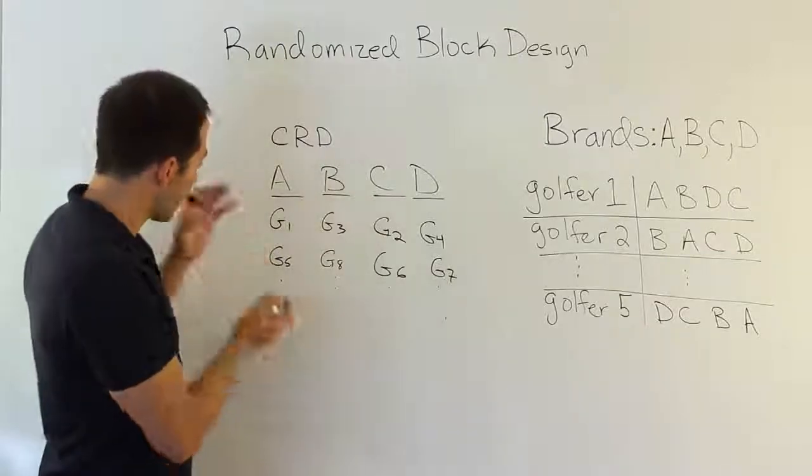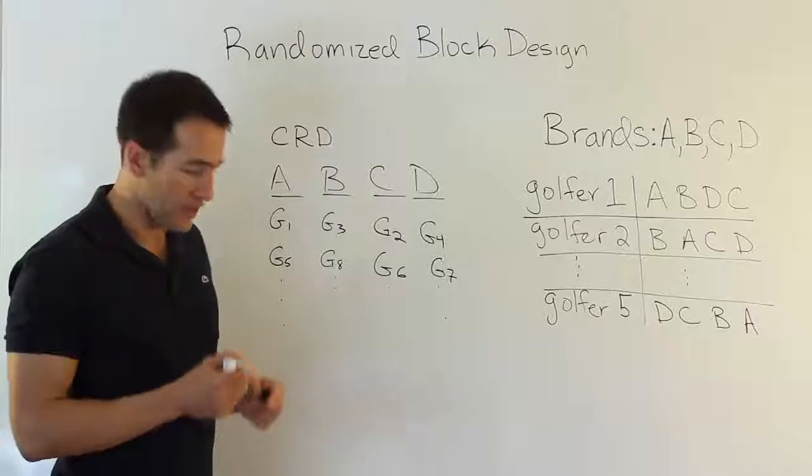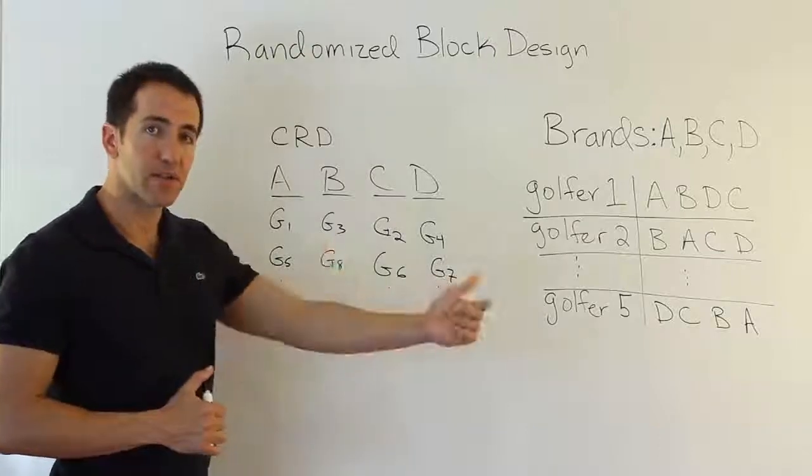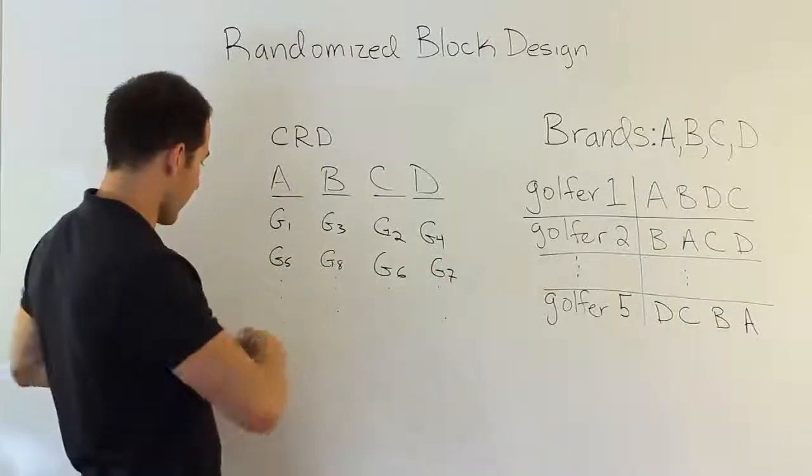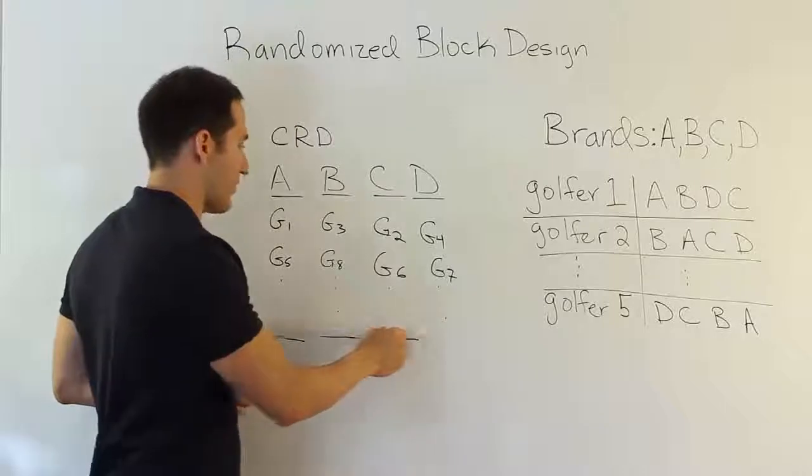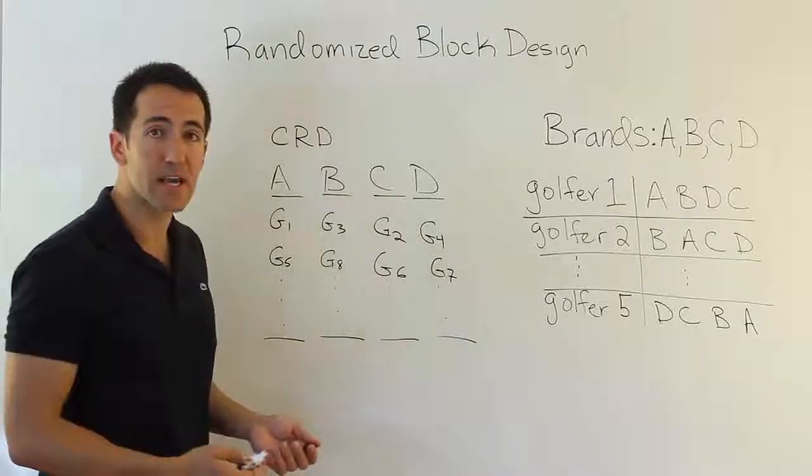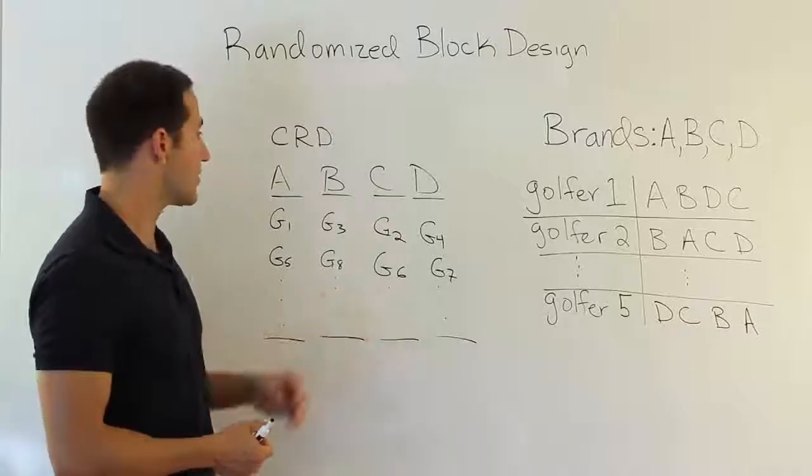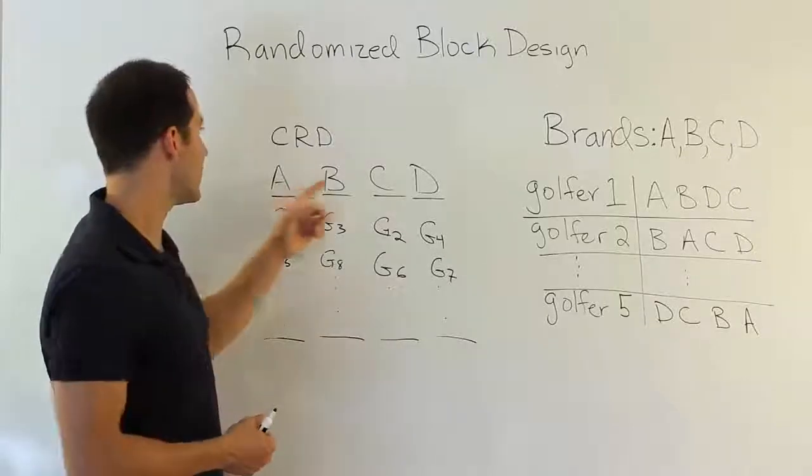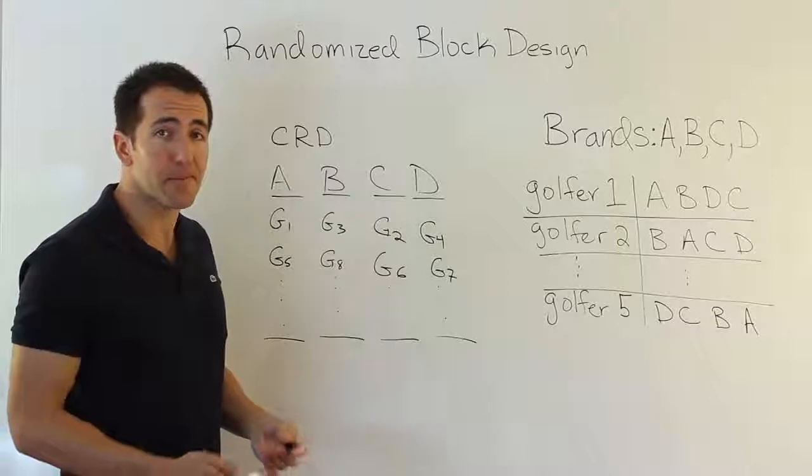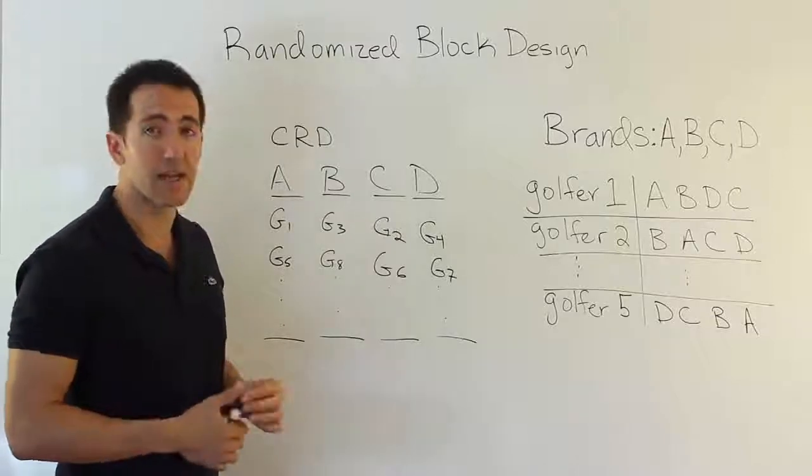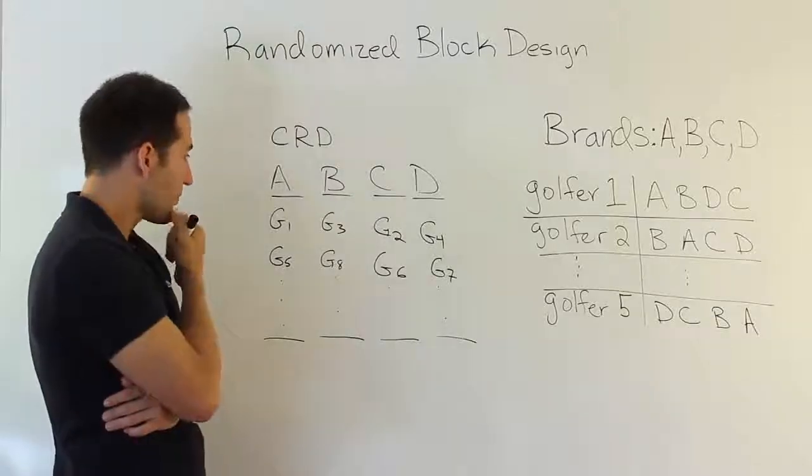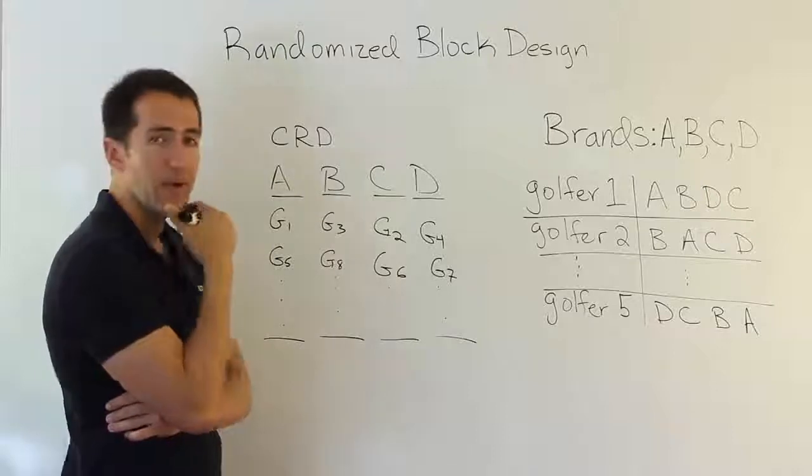We'll do this over and over until we end up having in each group five different golfers. Then those five golfers will all strike the ball and we'll measure the distances the balls travel and then we'll come out with totals. We'll have the total distances traveled and from there we can get mean differences. We can run the CRD ANOVA procedure and see if there's a meaningful difference between the flights achieved by each golf ball. That may seem like a perfectly legitimate design.